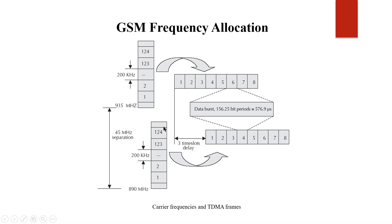Both uplink and downlink connections each have eight time slots per TDMA frame. There is a delay of three time slots for establishment before the first channel begins. The average burst time is 576.9 microseconds, carrying 156.25 bits per burst.